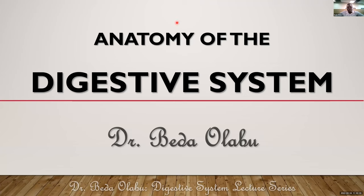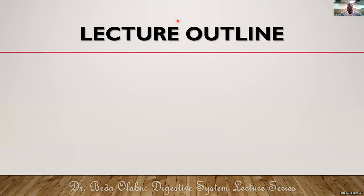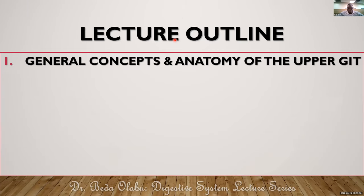Welcome to the lecture on the digestive system. The anatomy of the digestive system is quite long, so I've chosen to divide it into five parts. In the first series, which we're doing today, we'll talk about some general concepts about anatomy of the digestive system, then look at the anatomy of the upper GIT.